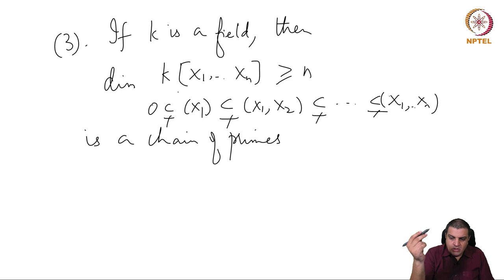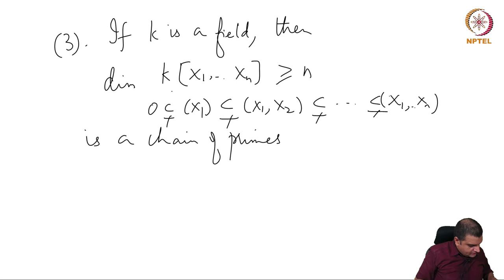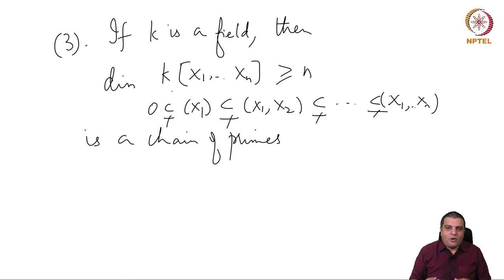There is some difficulty in proving the upper bound, partly because we do not yet know the structure of the spectrum of this ring. This is the end of this lecture. In the next lecture, we will start discussing further properties of integral extensions, and then we will spend time understanding Krull dimension more properly.